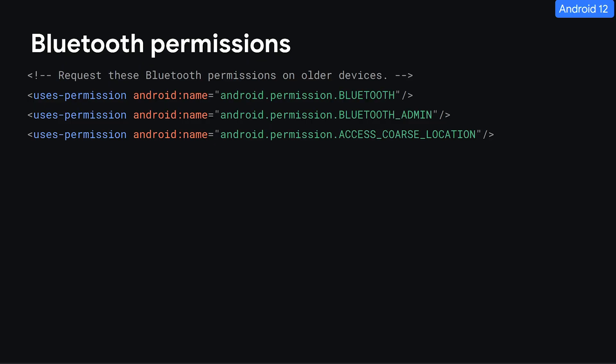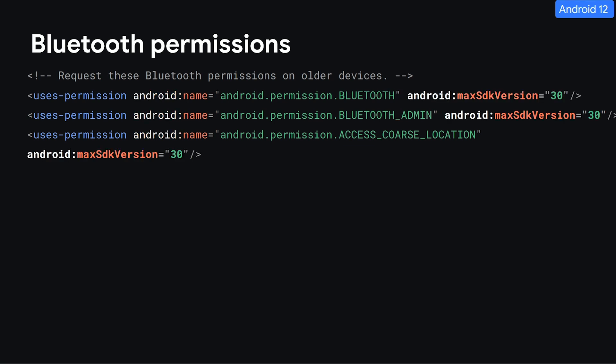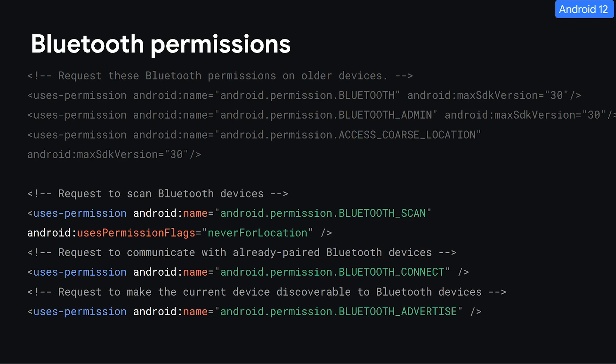Up until API level 30, your app had to request the Bluetooth Admin permission to discover and pair Bluetooth devices, along with a Bluetooth permission to connect with paired devices, and the location permission. When targeting API 31, you can set a Max SDK to API 30 on these existing permissions in your manifest, and add the Bluetooth Scan permission with the usesPermissionFlags set to neverForLocation, which tells the system that your app won't be using it to infer the device location. You'll also need to add the Bluetooth Connect permission to interact with Bluetooth devices, and the Bluetooth Advertise permission if you need to make the user's device visible to other Bluetooth devices.